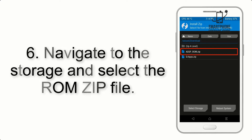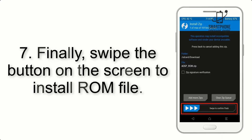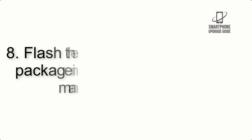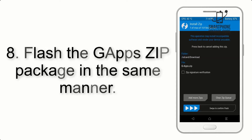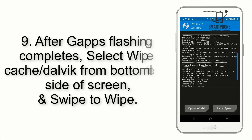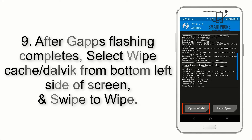Step 6: Navigate to the storage and select the ROM zip file. Step 7: Finally, swipe the button on the screen to install the ROM file. Step 8: Flash the GApps zip package in the same manner.